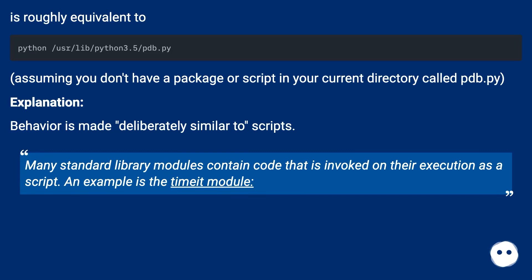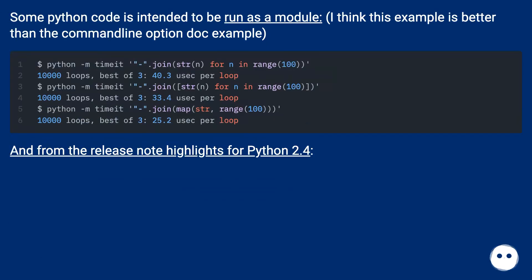This behavior is made deliberately similar to scripts. Many standard library modules contain code that is invoked on their execution as a script. An example is the `timeit` module. Some Python code is intended to be run as a module — this example is better than the command-line option doc example.